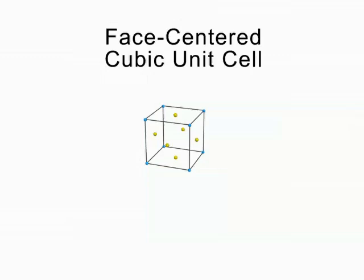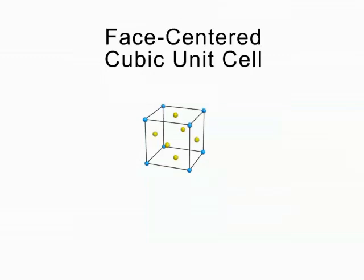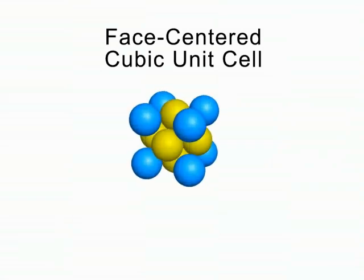The face-centered cubic unit cell has a particle at each corner and in each face, which are colored yellow here, but none in the center. The corner particles don't touch each other, but each corner does touch a particle in the face, and those in the faces touch each other as well.